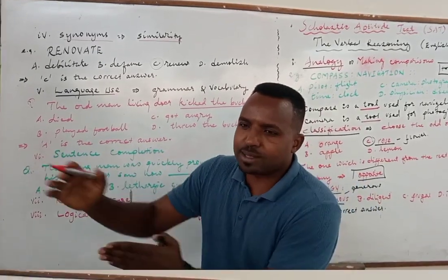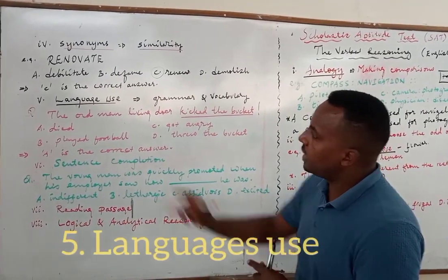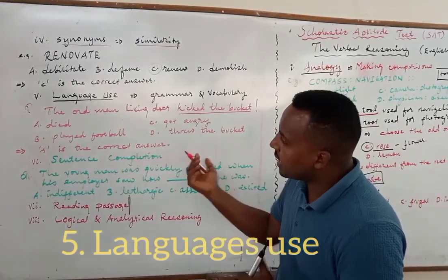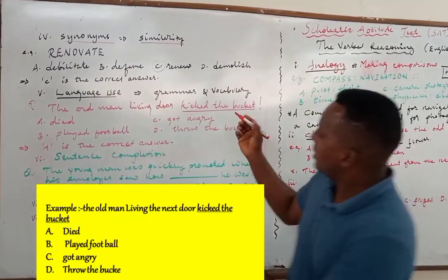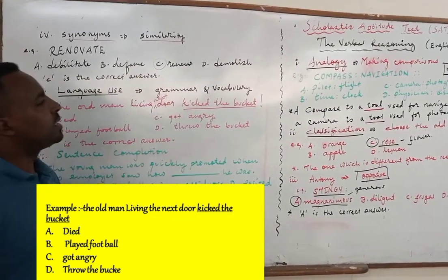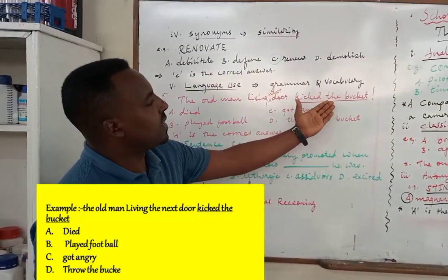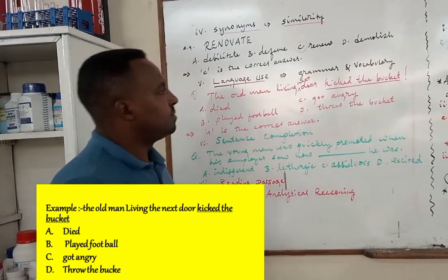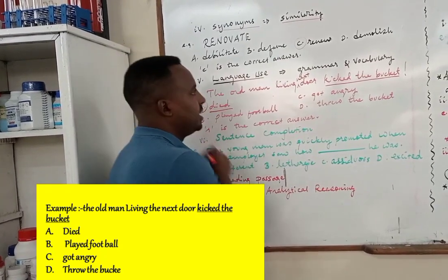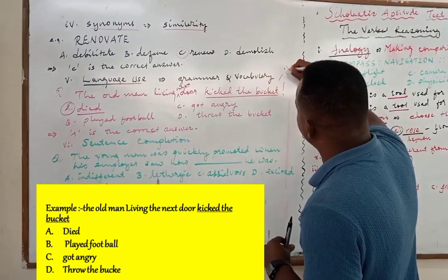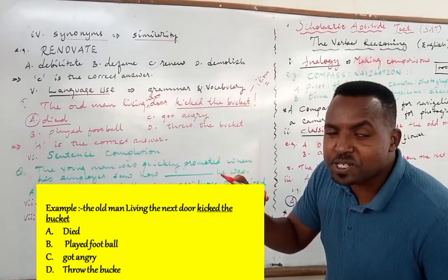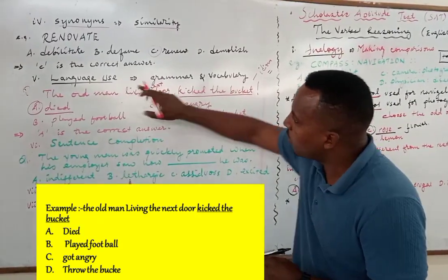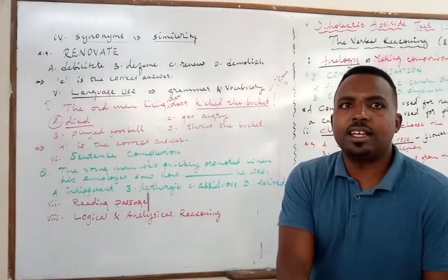Working out many sample items or exams helps improve vocabulary. The next section is language use, which is mainly about grammar structure and vocabulary. Language use is grammar. For example: 'The old man living next door kicked the bucket.' The meaning of the idiom 'kick the bucket' — does it mean die, play football, get angry, or throw the bucket? Well, to kick the bucket means to die. This is an idiomatic expression. Usually you can expect non-ordinary expressions — sayings, similes, idiomatic expressions, or hard grammar structures. We'll have these questions in detail at other times.